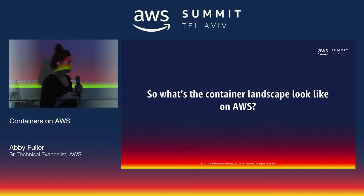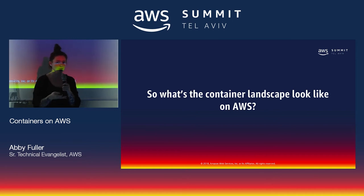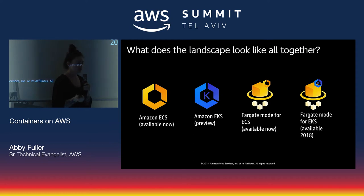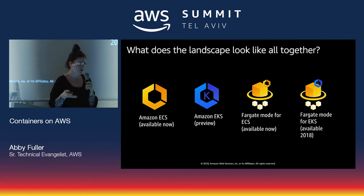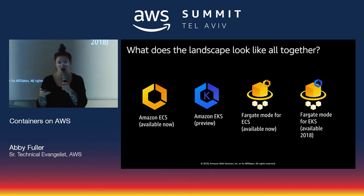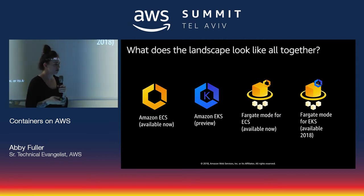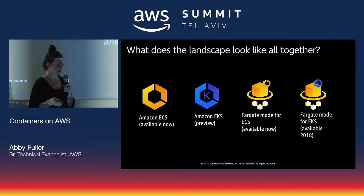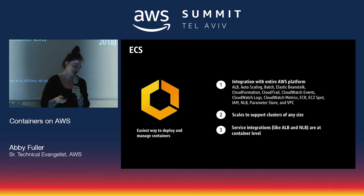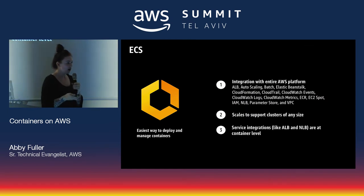Enter container orchestration tools — something like ECS, Kubernetes, or Docker Swarm. These are frameworks for managing all of those hard bits: how do I deploy, manage, and scale my software when I have thousands of moving pieces instead of just one? On AWS, you have Amazon ECS — the OG, available now, in multiple regions. You have Amazon EKS — the Amazon Elastic Container Service for Kubernetes — in preview. You have Fargate mode for ECS, available now but only in US East 1, and Fargate mode for EKS coming sometime in 2018.